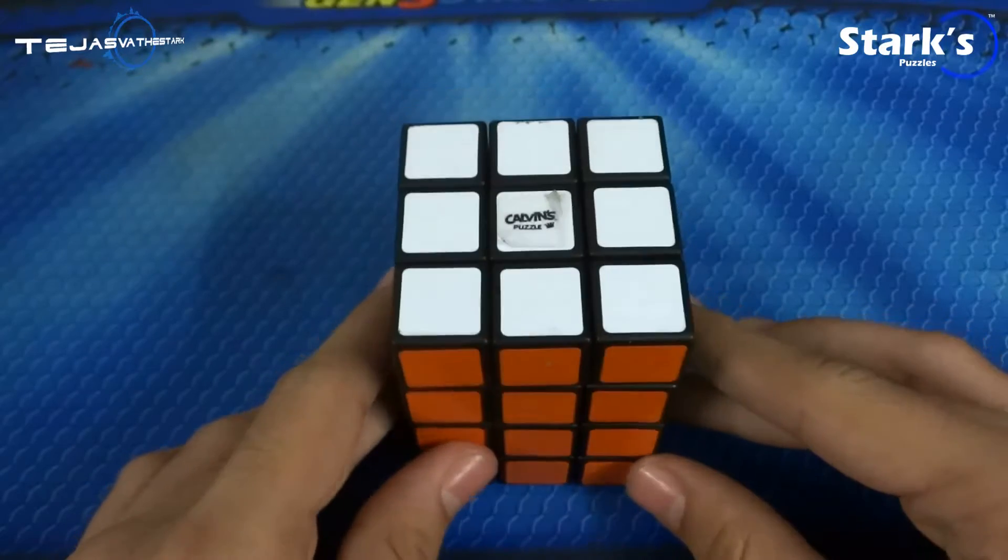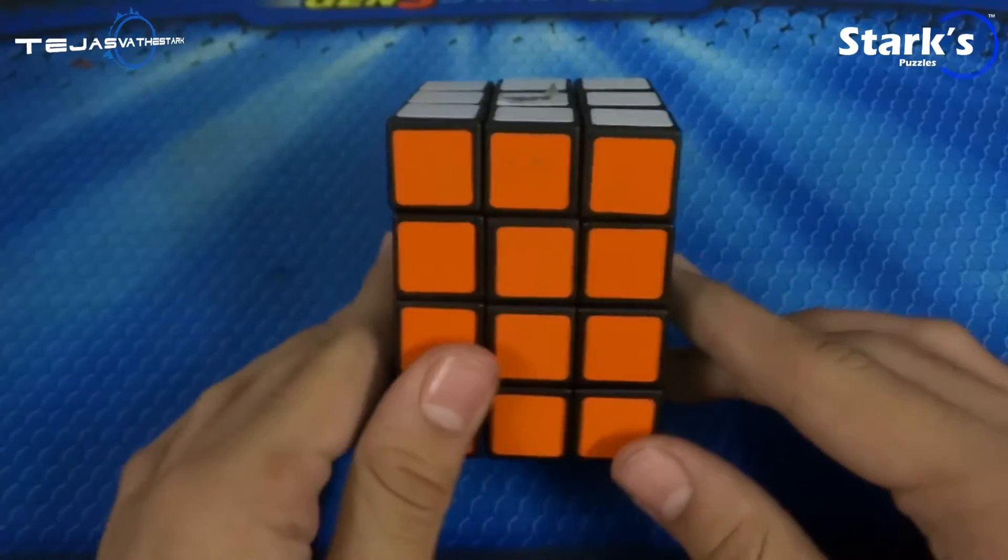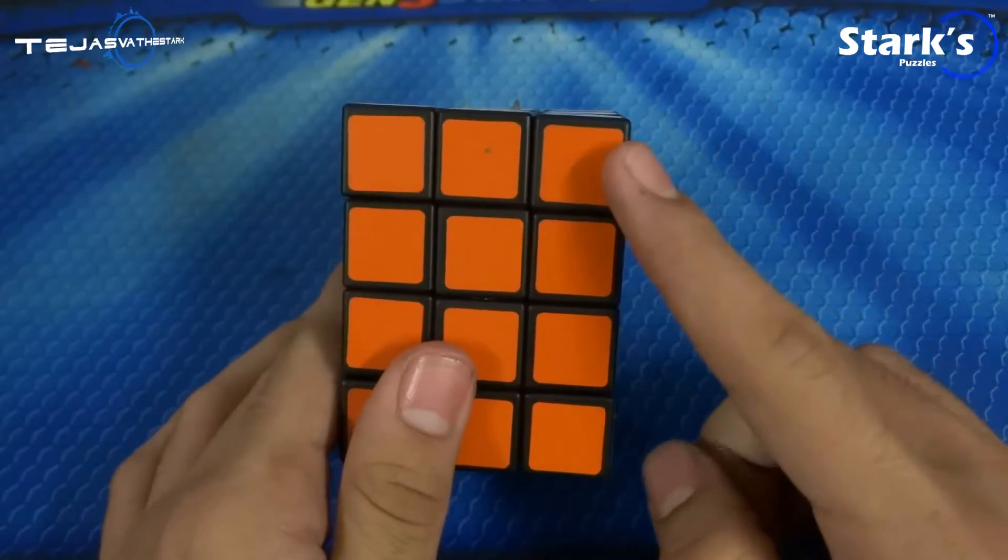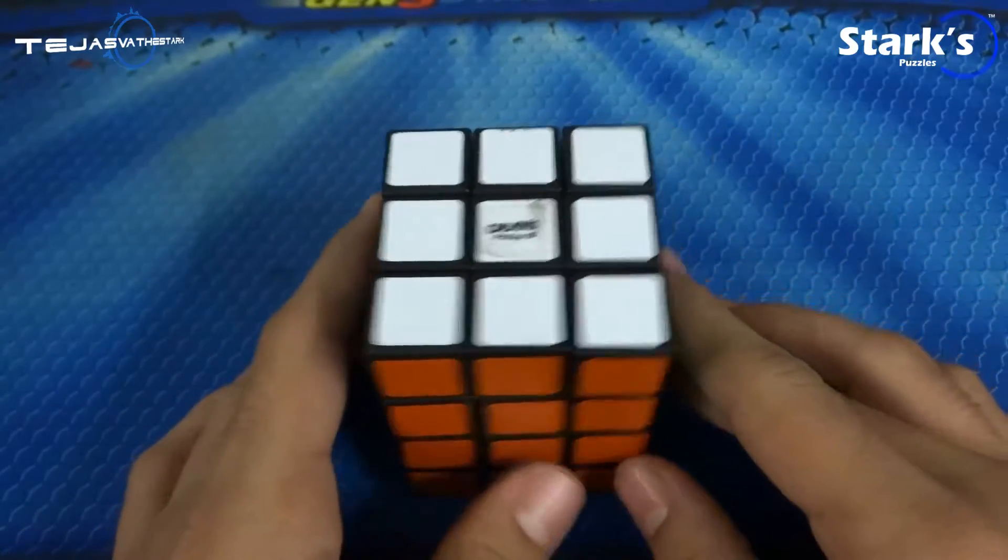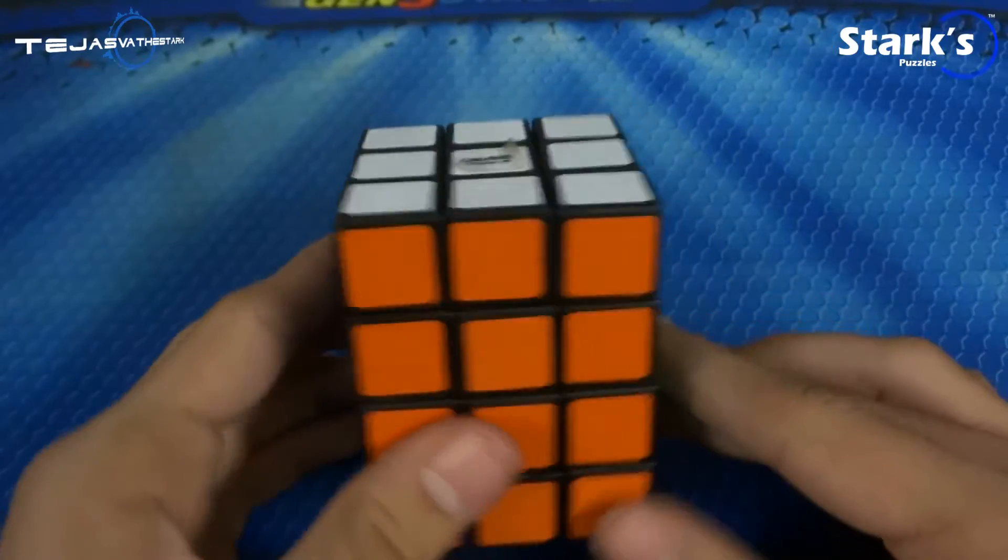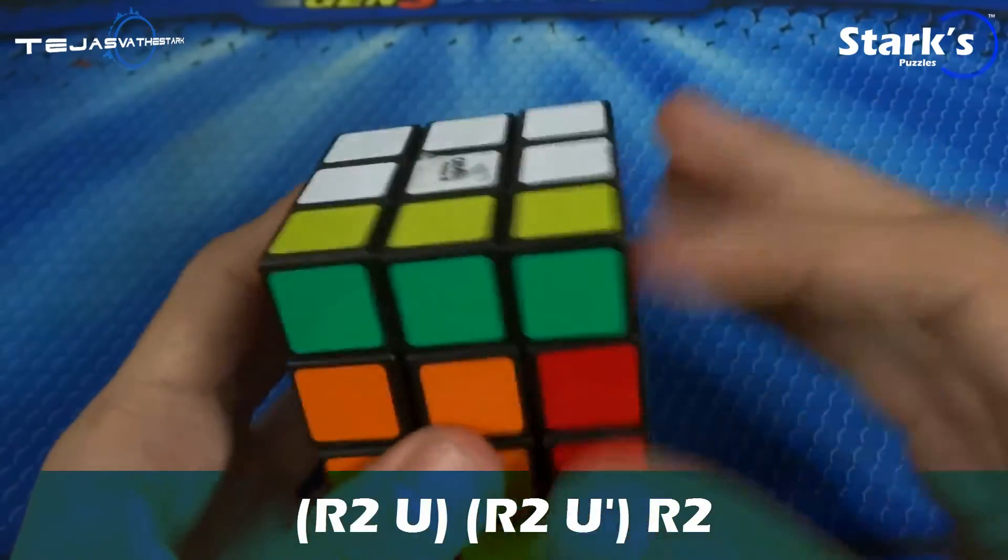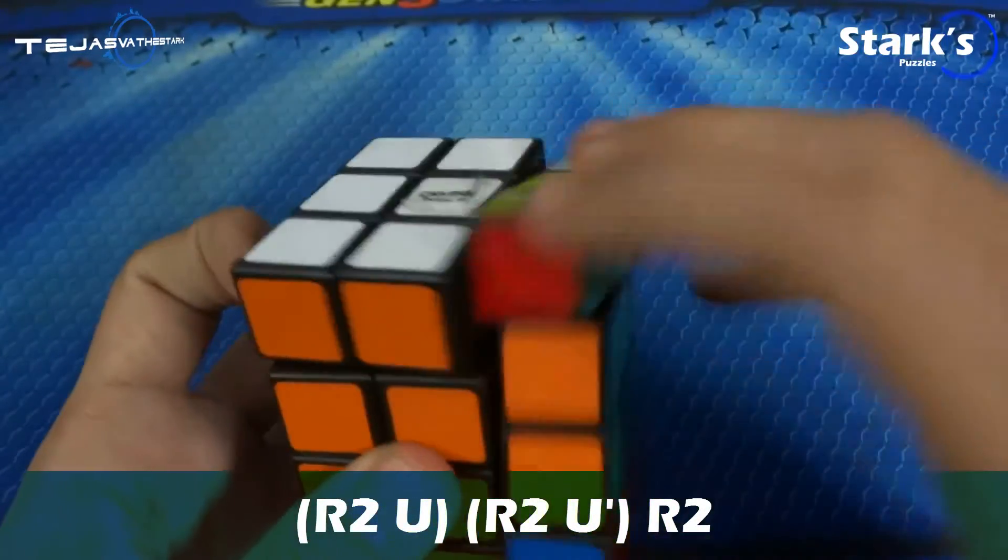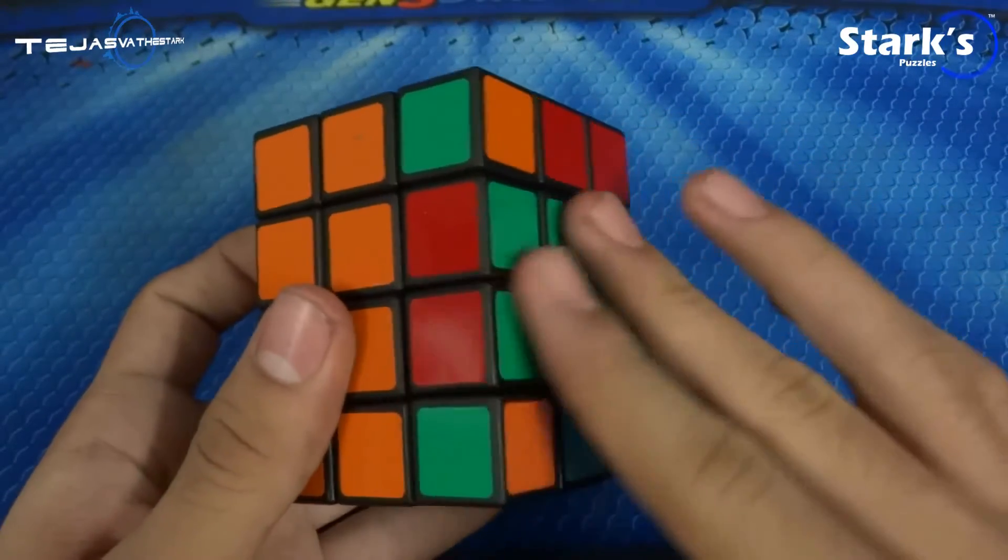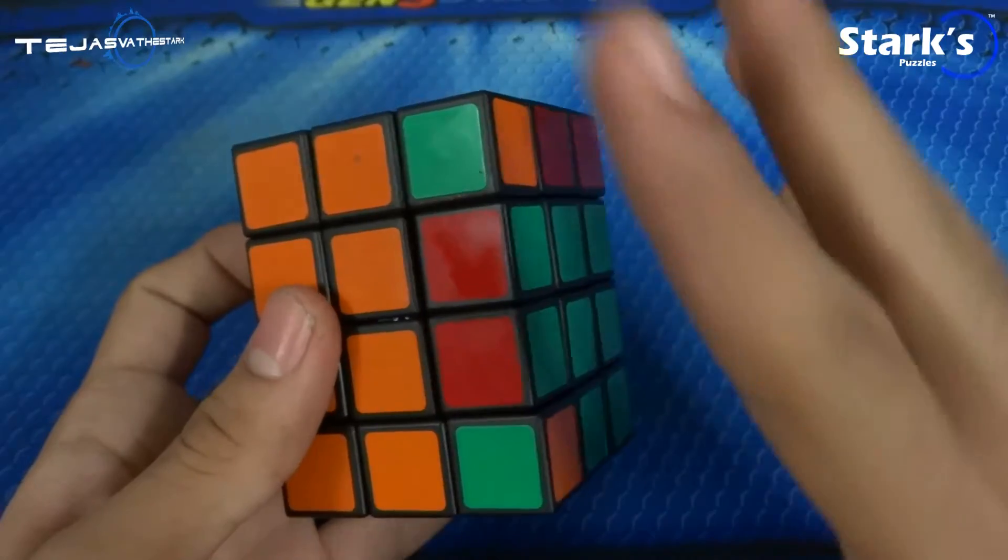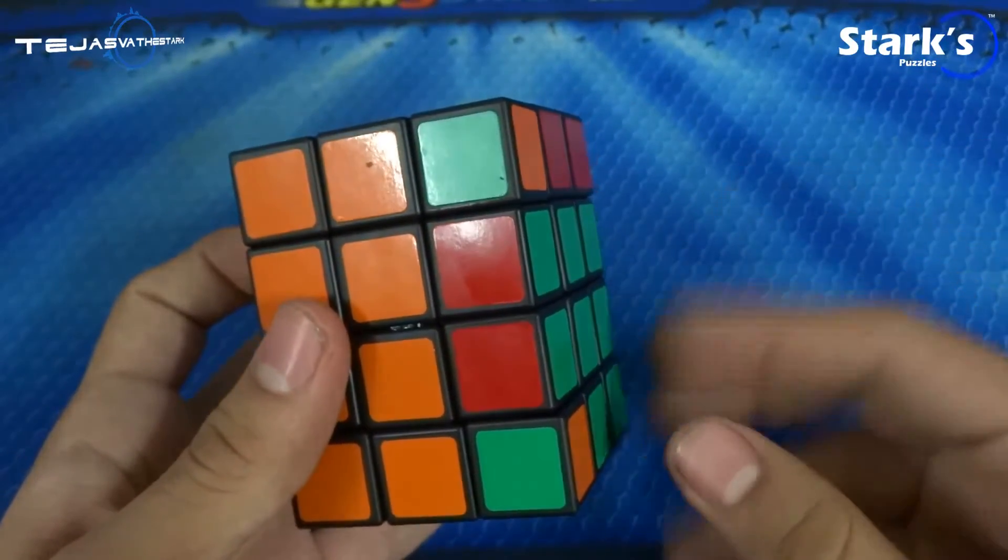The first one is the corner drop algorithm. What this does is it swaps this corner with this one, so that goes here and this comes there. It's a pretty easy algorithm. The algorithm for this is r2 u r2 u prime r2. As you can see these two got swapped and this entire thing got flipped around.